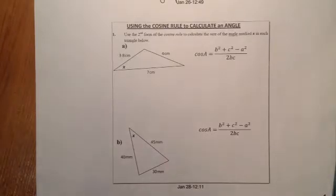Here we're looking at the cosine rule to calculate an angle. This is part of trigonometry in the National 5 course.